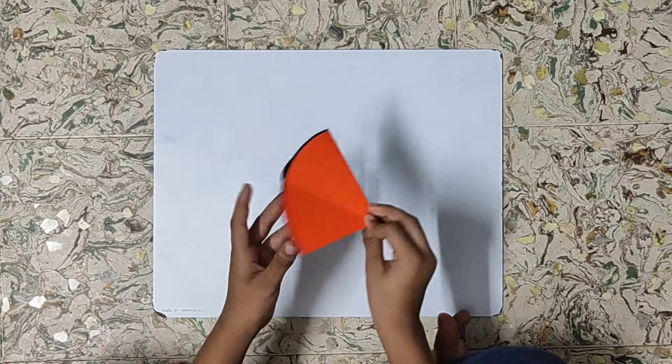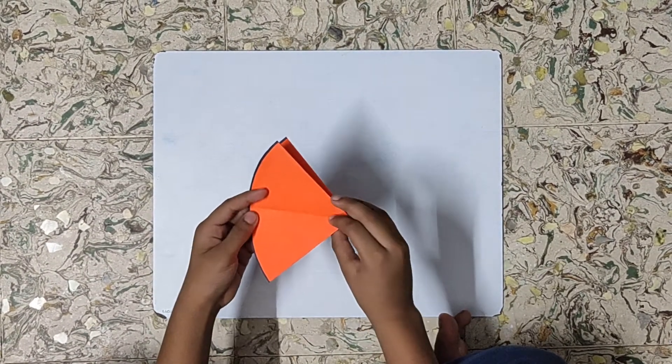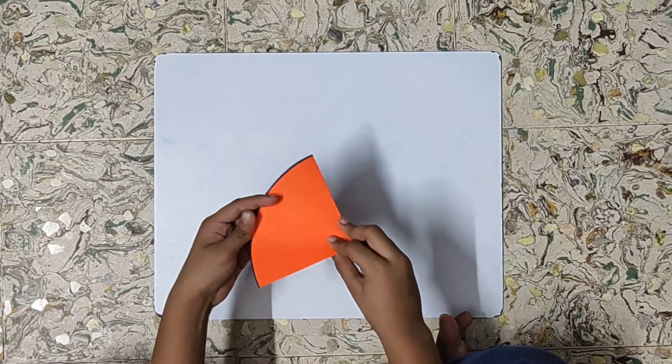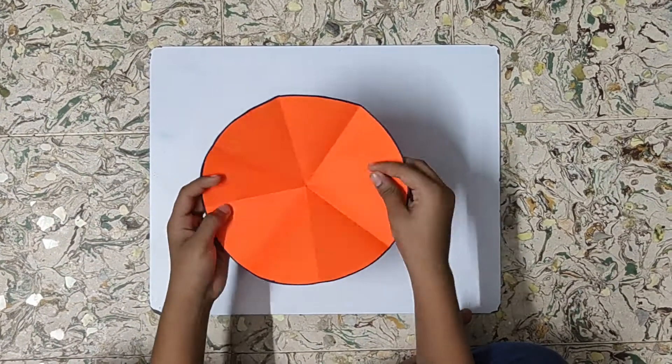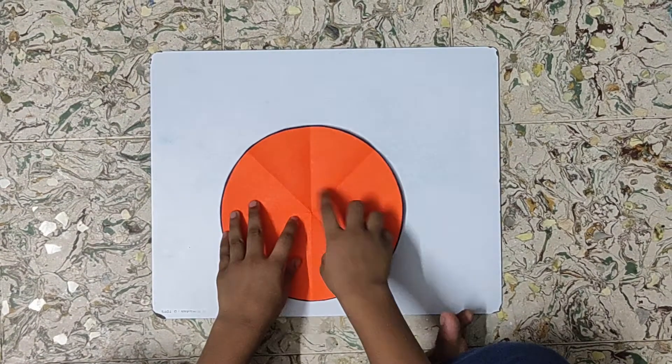On the other side, lift one flap and fold it to make 1 by 8. Now, open the paper. So see, we have 8 equal parts.